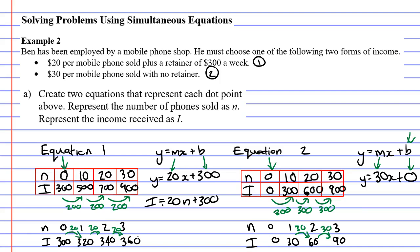Remembering that y becomes i and x becomes n. And we don't need to write the plus 0 down. We've come up with our two equations. Here's equation 1 and here's equation 2.